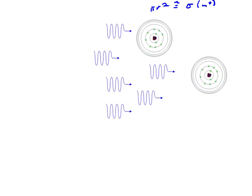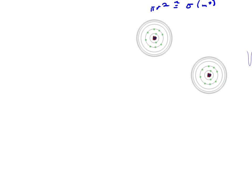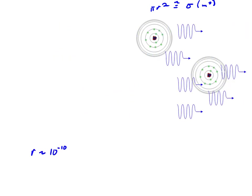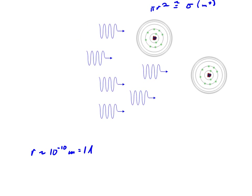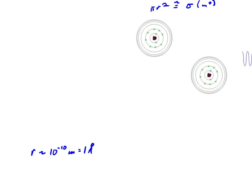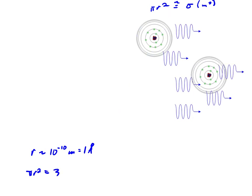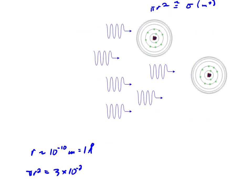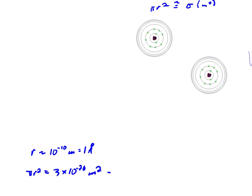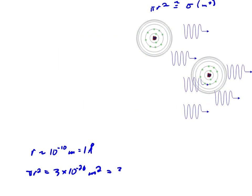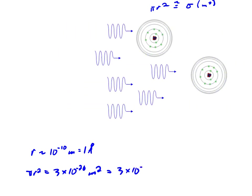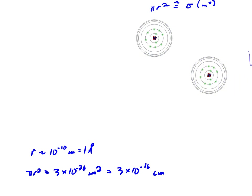So let's run some numbers here. An atom has a radius, r, of, say, something on the order of 10 to the minus 10 meters, or 1 angstrom. Pi r squared, in this case, is on the order of 3 times 10 to the minus 20 square meters. And cross-sections we always represent in terms of square centimeters. So it's on the order of 3 times 10 to the minus 16 centimeters squared for sigma, which actually turns out to be a pretty reasonable approximation.